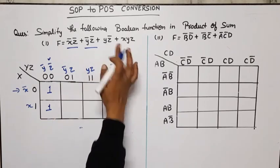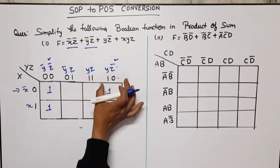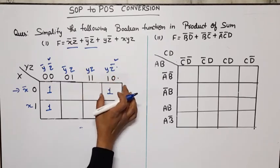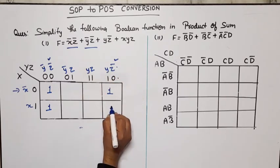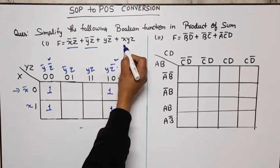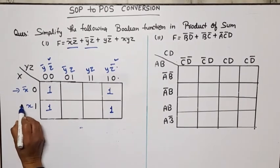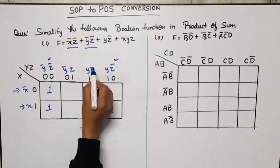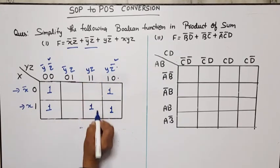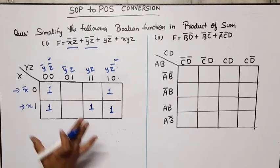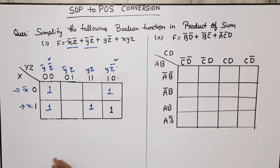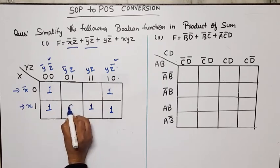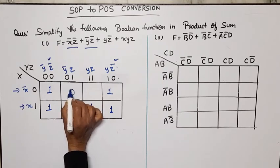Next term yz̄: y is 1 and z is 0, so this whole column gets a one. Last term xyz: this row and this column, so that one cell gets a one. We have now plotted all the SOP terms. The cells that are absent will get zero — we need those zeros to simplify the POS.